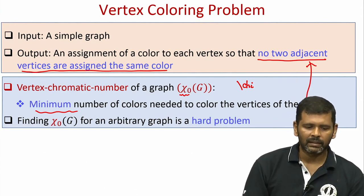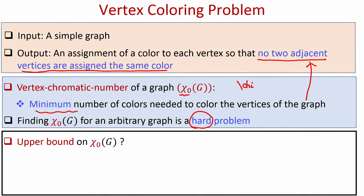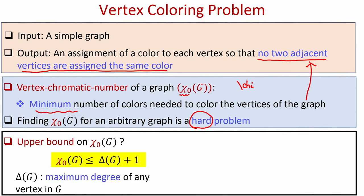Finding the chromatic number of a graph is a hard problem — we do not have efficient or practical algorithms for finding the vertex chromatic number when the number of vertices n is arbitrarily large. It turns out the vertex chromatic number is always upper bounded by 1 plus the maximum degree Δ(G) of any vertex in the graph. You can verify this with a complete graph of n vertices, where all degrees are n−1, and indeed n colors are needed.